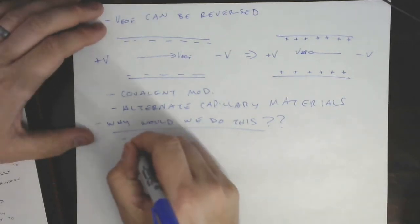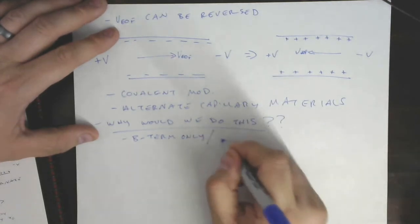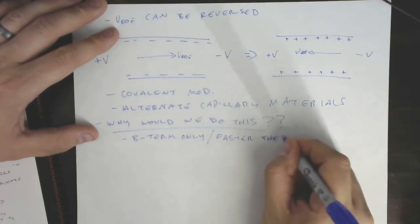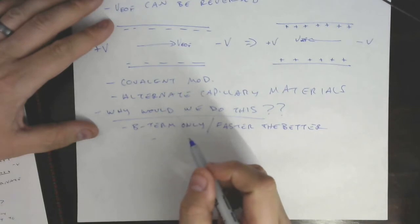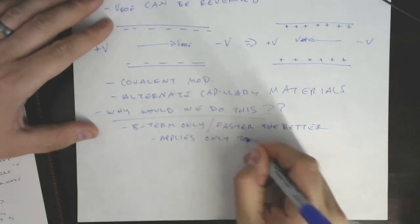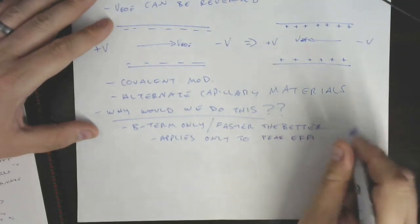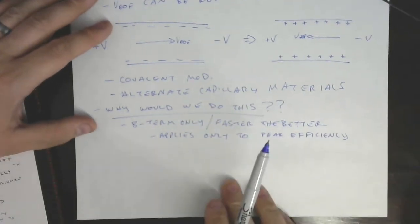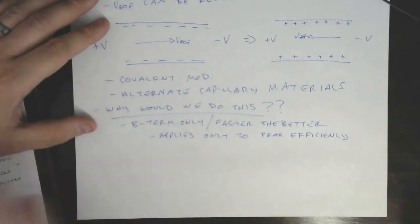Well, it turns out the simple answer is, as usual, not the right answer. That's because if we consider this B-term only phenomenon that we've talked about, also referred to by me as the faster you go, the better, that doesn't apply to all physics of separation. This is only, it only applies to what Van Deemter talks about, which is peak efficiency or band broadening. Right? Peak efficiency, number of theoretical plates, is not resolution. Number of theoretical plates is not separation. It's just telling us how narrow we can keep our peaks. Really helps get good resolution, but it's not the whole story, right?